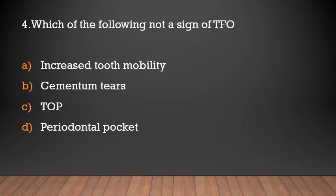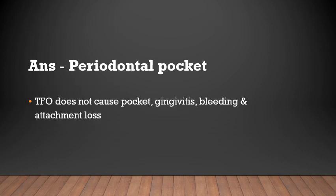Which of the following is not a sign of TFO? Options: increased mobility, cementum tears, tenderness on percussion, or periodontal pocket. The answer is periodontal pocket — trauma from occlusion does not cause pocket formation, gingivitis, bleeding, or attachment loss.